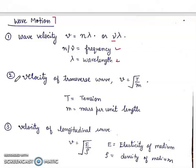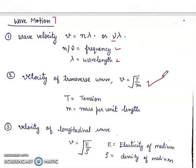Second is velocity of transverse wave. Velocity of transverse wave is given by V = √(T/M), where T is tension and M is mass per unit length.